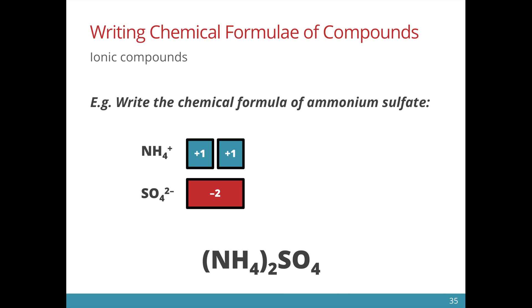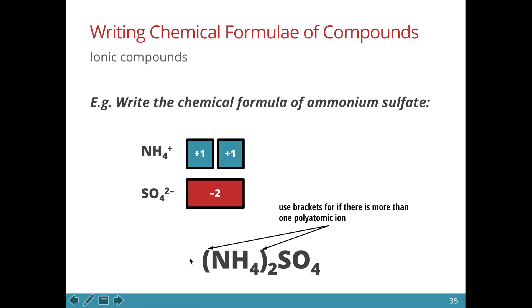Once again, when we have more than one polyatomic ion, we need to put in the brackets. We don't have to put a bracket for sulfate because there is only one of it.